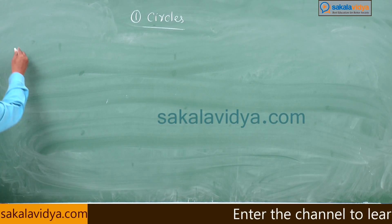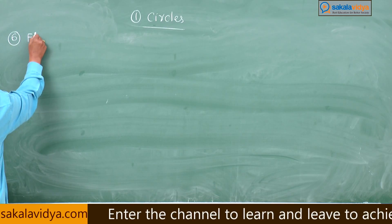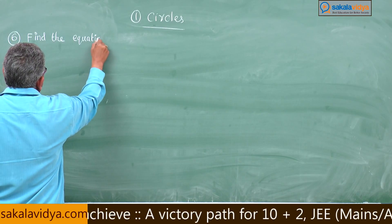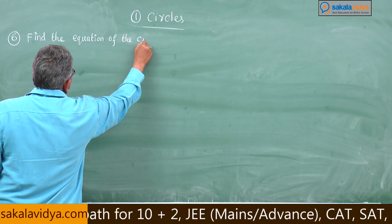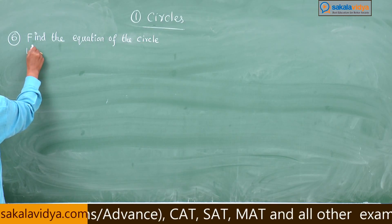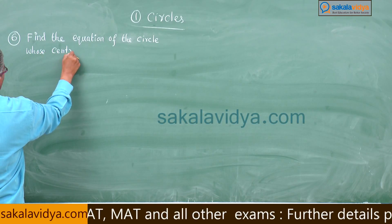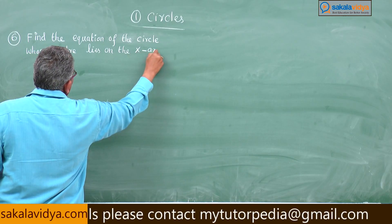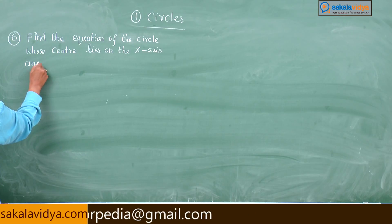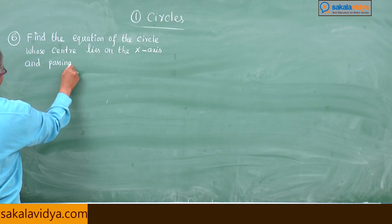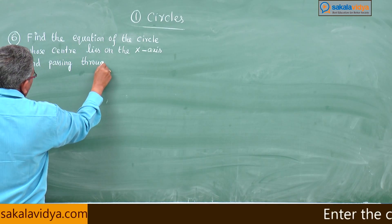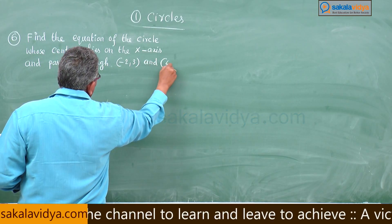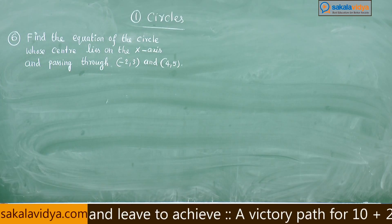Sixth problem: find the equation of the circle whose center lies on the x-axis and passing through minus 2 comma 3 and 4 comma 5.